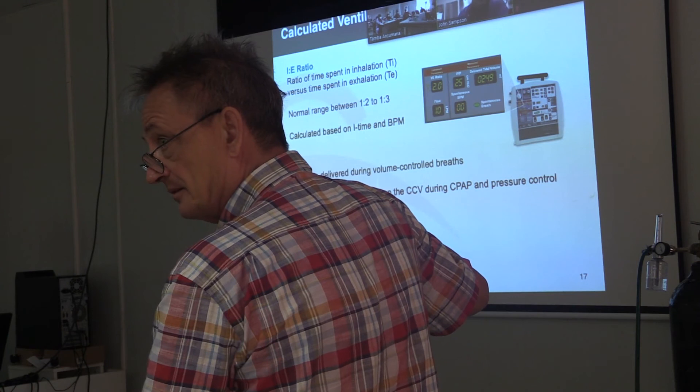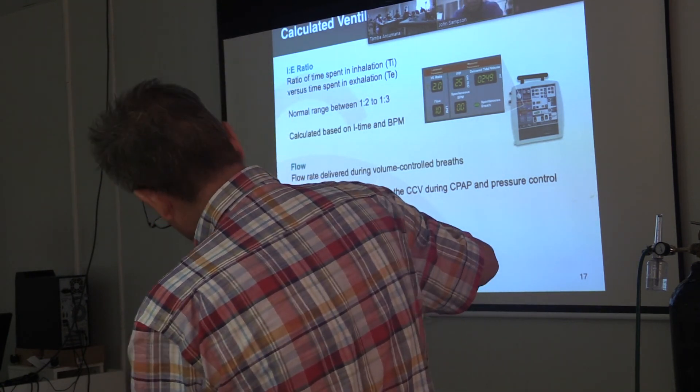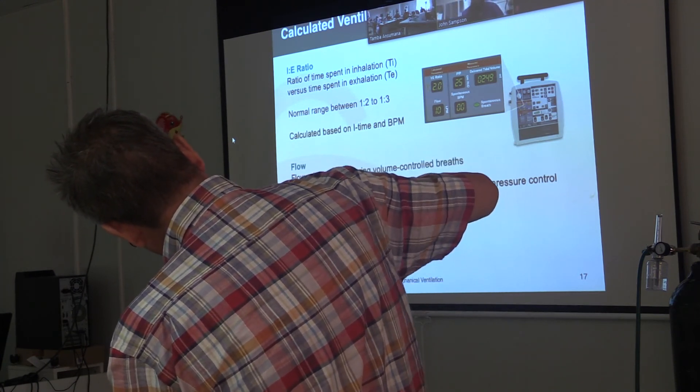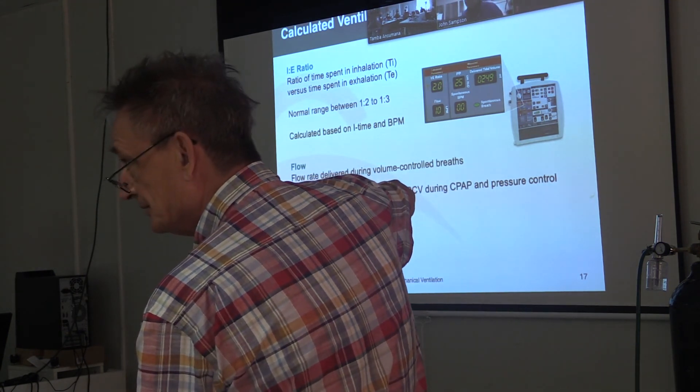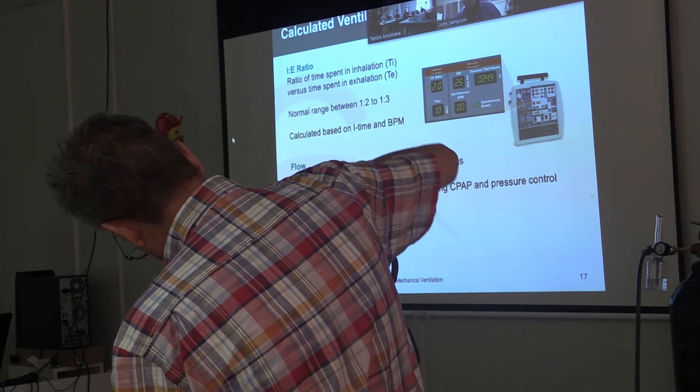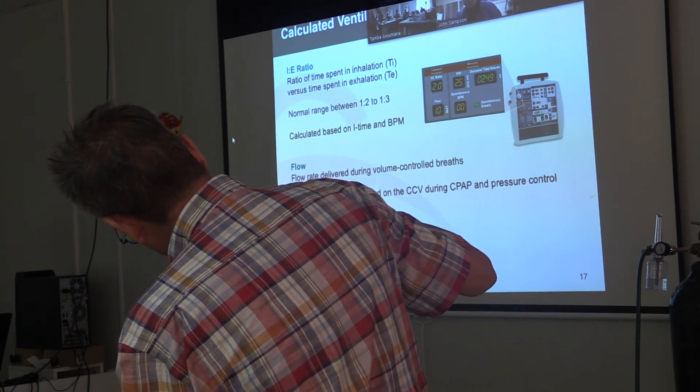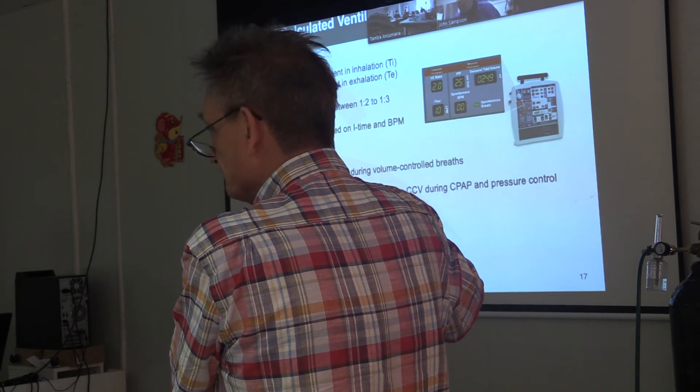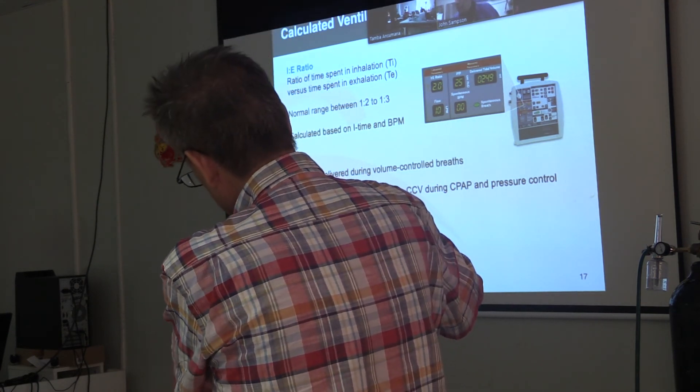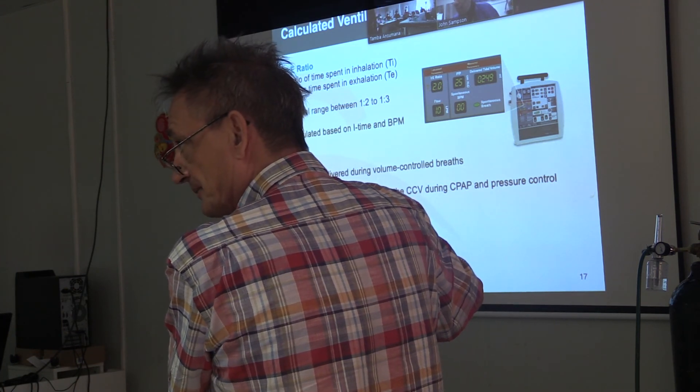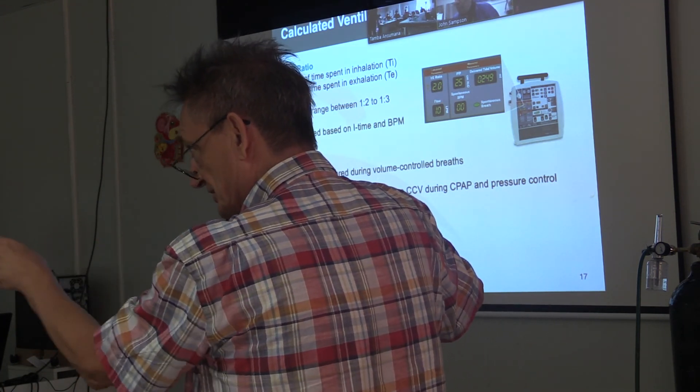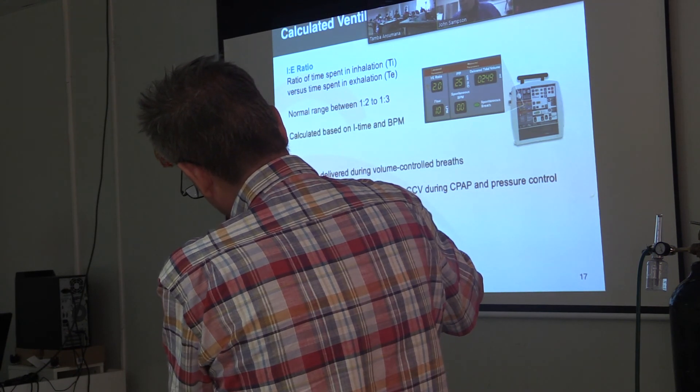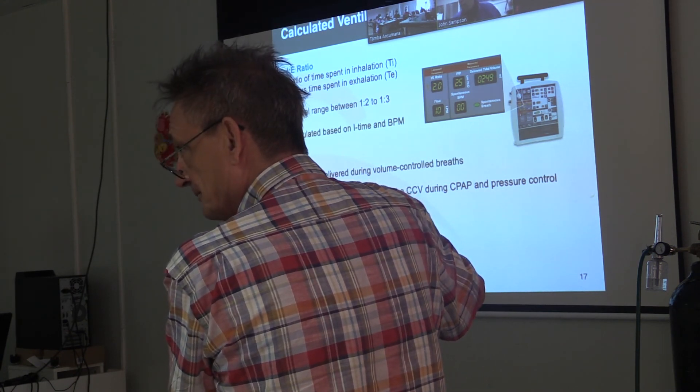Now, I want to increase the breath per minute because I think the patient needs more. So I've got it to 20. Look what happens to my IE ratio. So I need to adjust my I time again to go back. So every time you change your respiratory rate, you have to check your IE ratio and adjust your respiratory rate. And it's different from other machines, especially the M7 machines. So here you set the IE ratio by changing your respiratory rate.